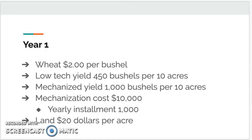Year one. The cost of wheat is $2 per bushel. A low-tech yield — meaning you don't have a lot of farming equipment — will produce 450 bushels on your 10 acres of land. A mechanized yield is going to produce 1,000 bushels on those same 10 acres. The cost to get mechanized is $10,000 with yearly installment payments of $1,000. If you want to buy more land, it's $20 per acre. Write down what you intend to do and how much you made that year, starting with 10 acres of farmland.